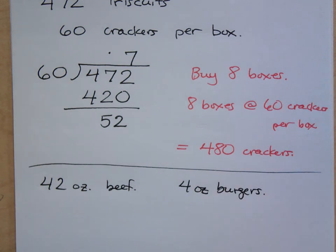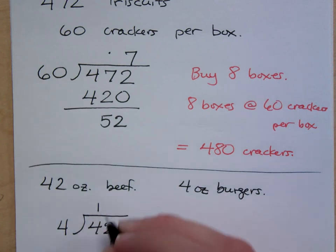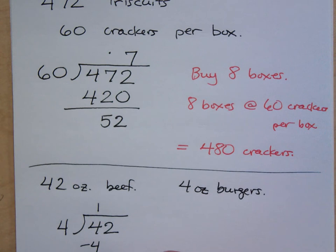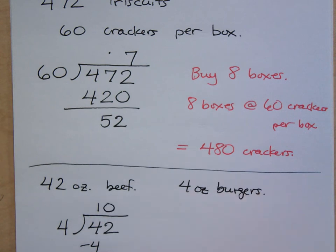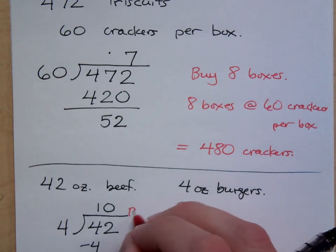How many burgers did I make last night? I made 10. Because if I look at this, in my head I'm doing, I need to divide 4 into 42 to find out how many burgers I can make. 4 goes in here once. 4 doesn't go into 2, so that's a 0. And I have a remainder of 2, right?